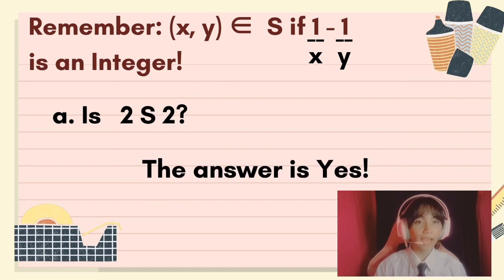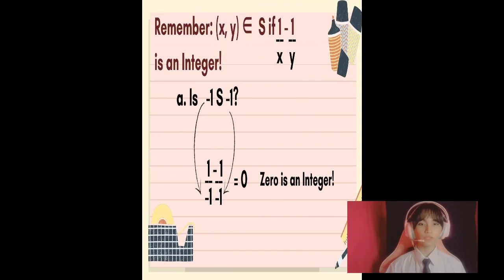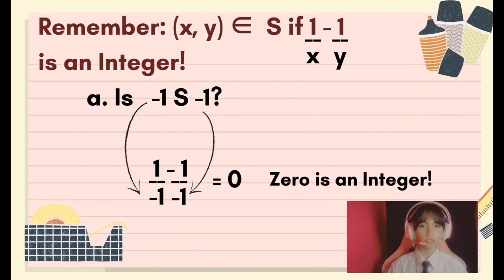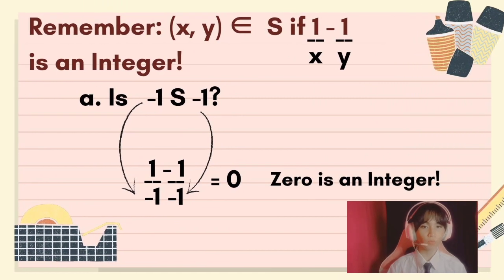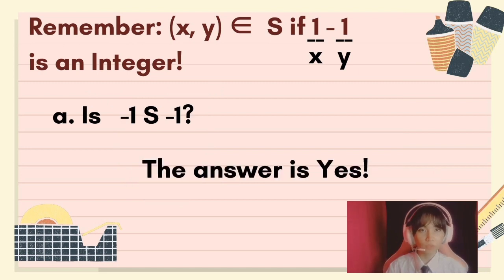So the answer is yes. For the second question, negative 1 and negative 1, we also do the same process. So 1 over negative 1 minus 1 over negative 1, the answer will also be 0, and 0 is an integer. So it is a yes.